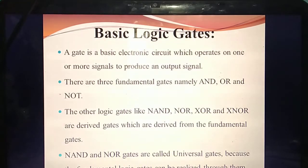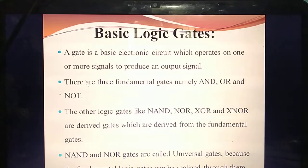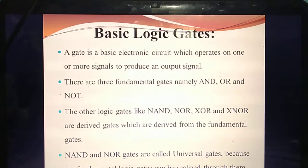Electric signals are used to produce an output signal. To get an output, which needs to be there? Input. Each logic gate will have inputs as well as an output. A logic gate is a basic electronic circuit mainly operated on signals. Based on the input, it will produce an output signal. We have studied logical operations — AND, OR, and NOT. Now the same thing you are going to implement in logic gates.